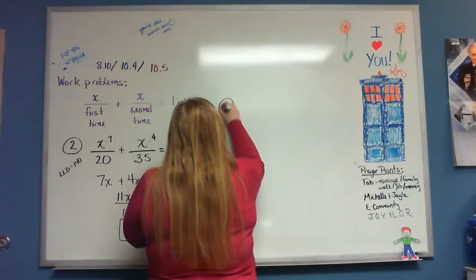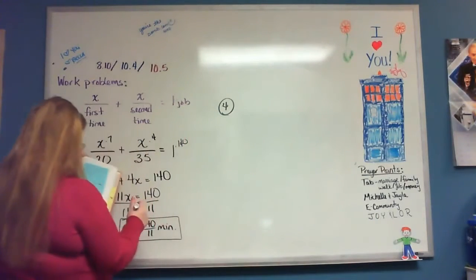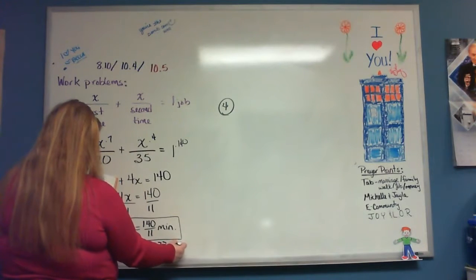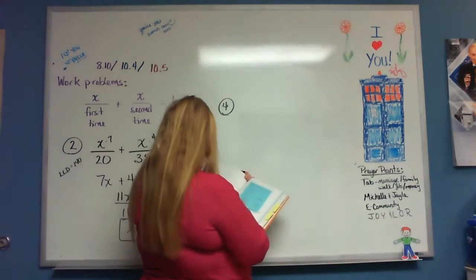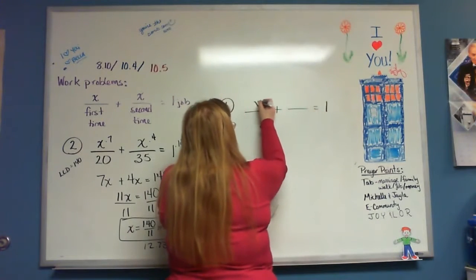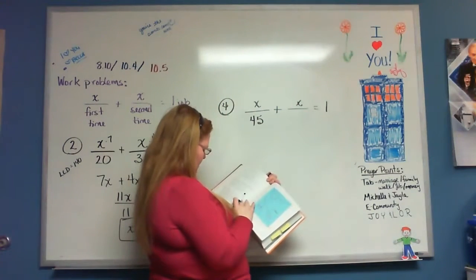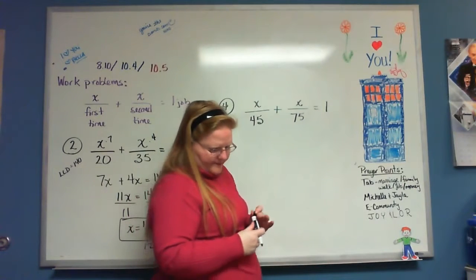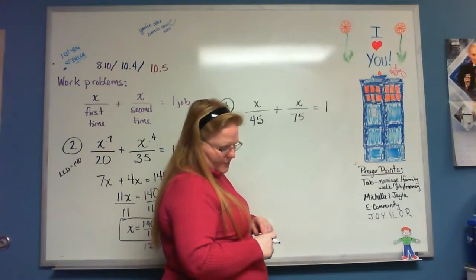Problem number four: Peggy can gather a bushel of apples in 45 minutes and Peter can gather it in 75 minutes. How long will it take Peggy and Peter to gather a bushel of apples if they work together?